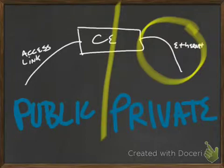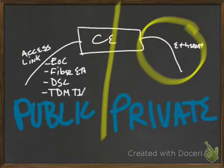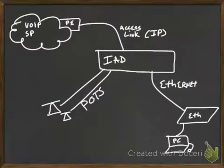For example, this access link could be ethernet over copper, just a conventional ethernet to the customer's facility. It could be some sort of fiber delivery. It could also be, very commonly, some sort of DSL service. It could also be a TDM circuit, such as a TDM T1 or E1.